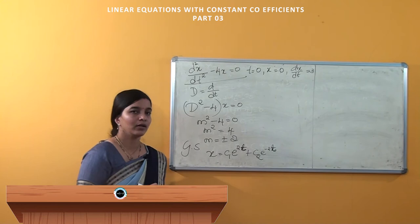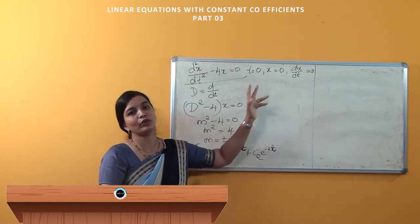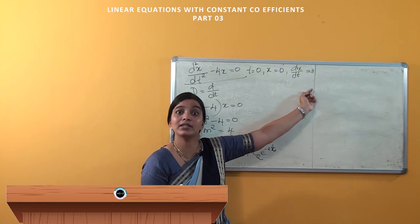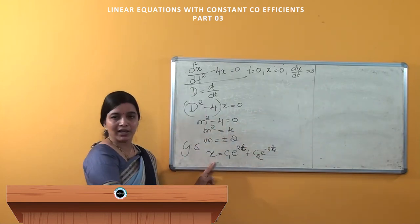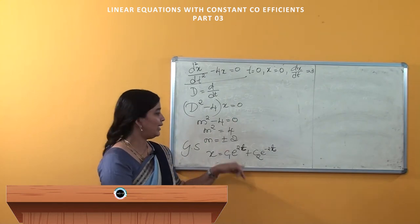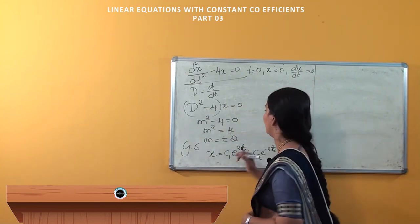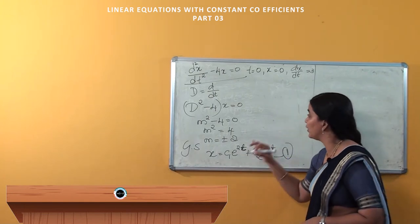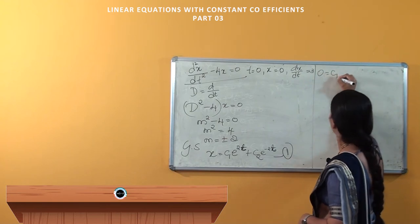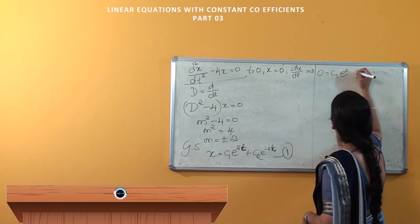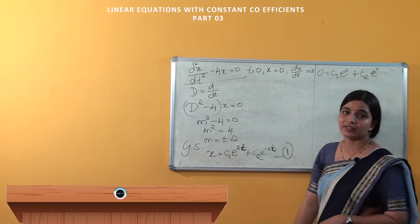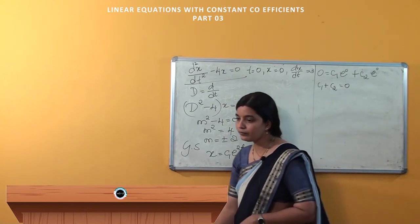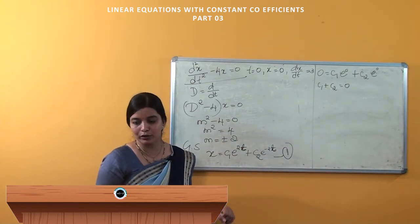Now we apply the given conditions. The first condition is t = 0, x = 0. Substituting into the general solution, we get 0 = c1·e^0 + c2·e^0, which gives us c1 + c2 = 0. This is our second equation.